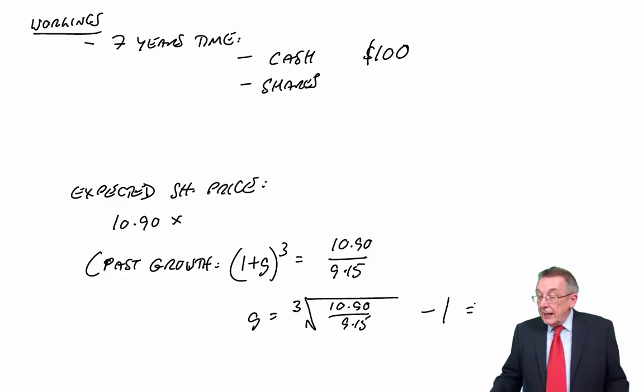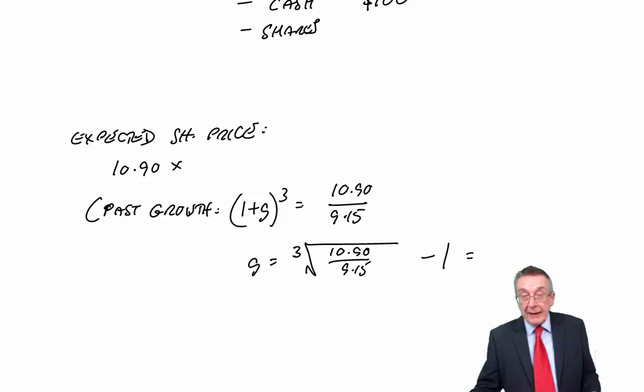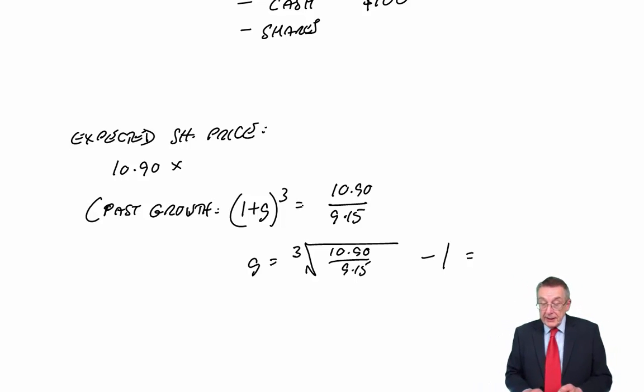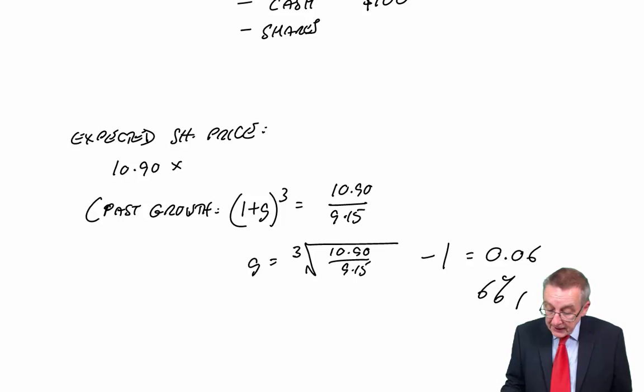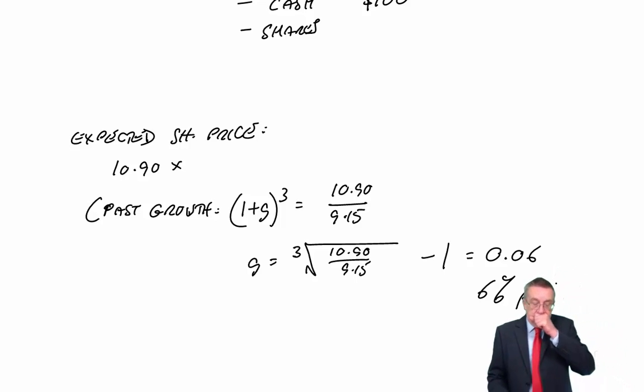For F9, you should be aware, you have to have a scientific calculator. You certainly need one here. The cubed root 10.9 divided by 9.15. The cubed root 1.06 minus 1. It comes to 6.01. Well, effectively, it's 0.06, or 6%.